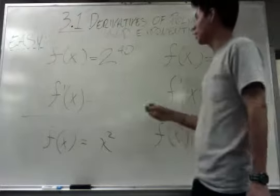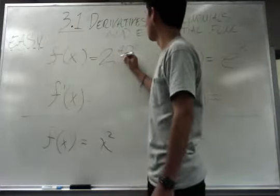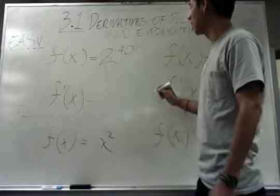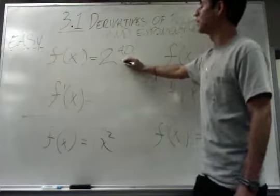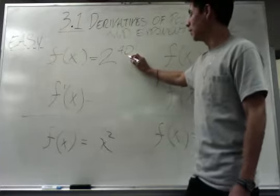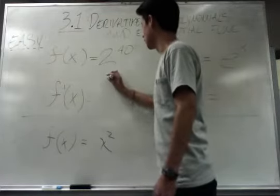So to start off, we're going to be working on f of x equals 2 to the power of 40. Whenever you have a constant and you take the derivative, you're always getting zero. Now this is a special case because we have a constant with a power of 40. Either way, since it's still a constant, there's no variable, your derivative is still going to be zero.